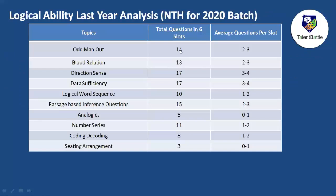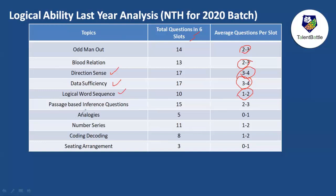Based on last year's analysis, odd-man-out had 14 total questions — two to three per slot. Blood relations: two to three questions per slot. Direction sense and data sufficiency had 17 problems total — three to four questions per slot each. Logical word sequence: one to two questions. Passage-based inference questions are also important with two to three questions per slot.